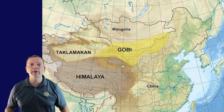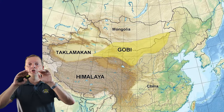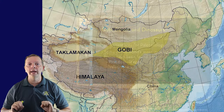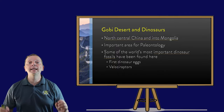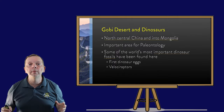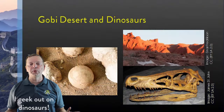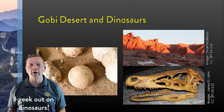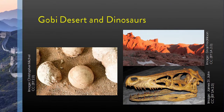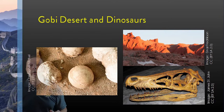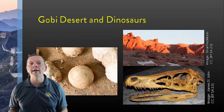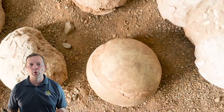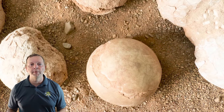The Gobi Desert is found in north-central China and stretches into Mongolia — and it's perhaps my favorite desert, because some of the most important dinosaur fossils have been found there, including Jurassic Park's own Velociraptor. Near a rocky outcrop known as the Flaming Cliffs, the first-ever dinosaur eggs were actually found.